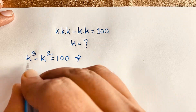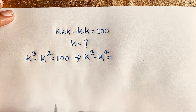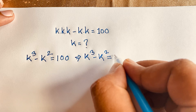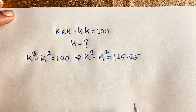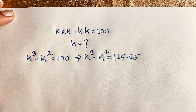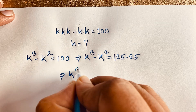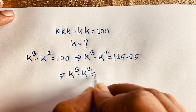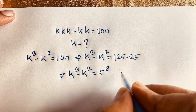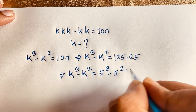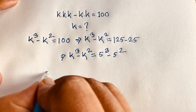If I evaluate this equation, k³ minus k² equals 100. I can see that 125 minus 25 equals 100 — look, 125 minus 25 is 100. So k³ equals 125, which is 5³, and k² equals 25, which is 5².